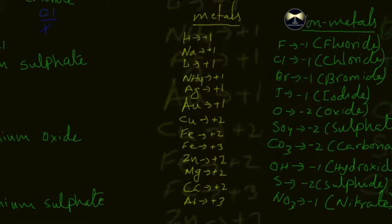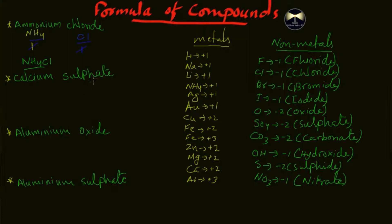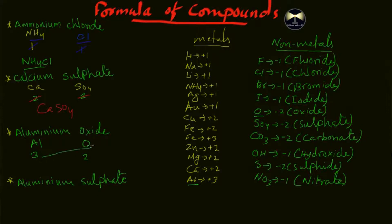Now let's look at calcium sulfate. The symbol for calcium is Ca and the symbol for sulfate is SO4. Here is the key technique: if the two elements have a different oxidation state, you cross multiply them. For example, with aluminium oxide, a three goes to the oxygen and a two comes to the aluminium, giving you Al2O3.